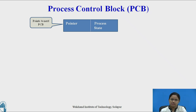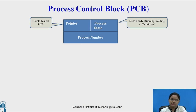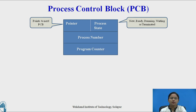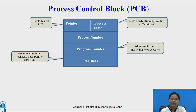The next field is process state, which may be new, ready, running, waiting, or terminated. Each process also has a unique process number stored in its PCB. The program counter field gives the address of the next instruction to be executed. The registers field includes the accumulator, index registers, stack pointer, and general-purpose registers — all used by the process during execution, and their values are stored in the PCB.